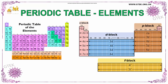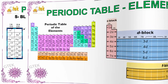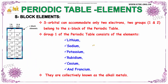F block elements are also called actinides and lanthanides. Each element is accommodated in a particular orbital — it's 2p, 3p, 4p, 5p, 6p orbitals for P block; 3d, 4d, 5d, and 6d orbitals for D block; and 4f and 5f for F block.